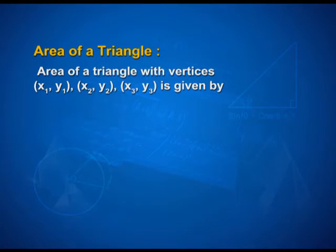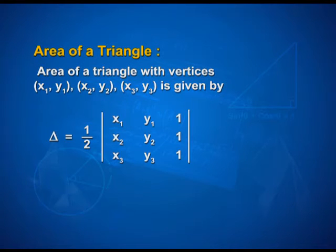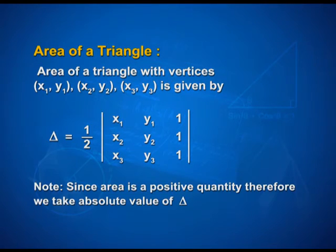Now students, let us learn how to calculate the area of a triangle using expansion of determinants. The area of a triangle with vertices (x₁, y₁), (x₂, y₂) and (x₃, y₃) is given by: Area = ½ · |det([x₁, y₁, 1; x₂, y₂, 1; x₃, y₃, 1])|. Note that since area is a positive quantity, we take the absolute value of the determinant.